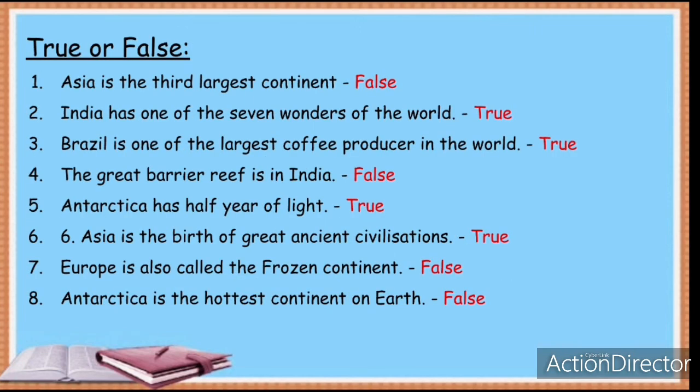True or False: Asia is the third largest continent — False. India is one of the seven wonders of the world — False. Brazil is one of the largest coffee producers in the world — True. The Great Barrier Reef is in Australia — True. Antarctica is half a year of sunlight — True. Asia is the birthplace of great ancient civilizations — True. Europe is also called the Frozen Continent — False. Antarctica is the hottest continent on Earth — False.